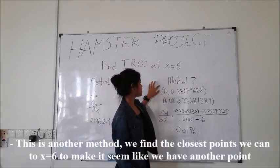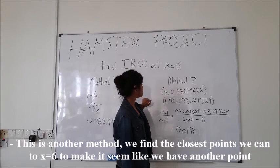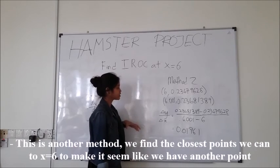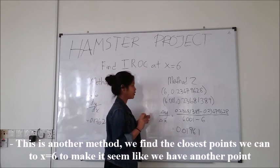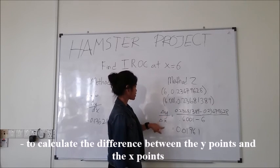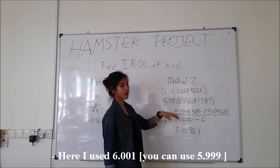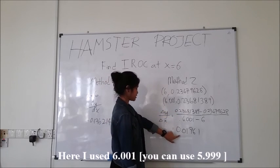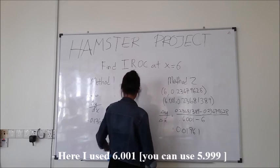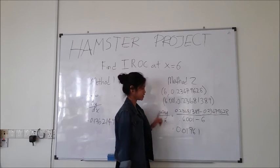So this is another method. Here we find the closest point to 6 that we can find to make it seem like we have another point to calculate the difference between the y points and the x points. Here I use 6.001, and the answer is 0.01761, which is also the same as the dy dx.